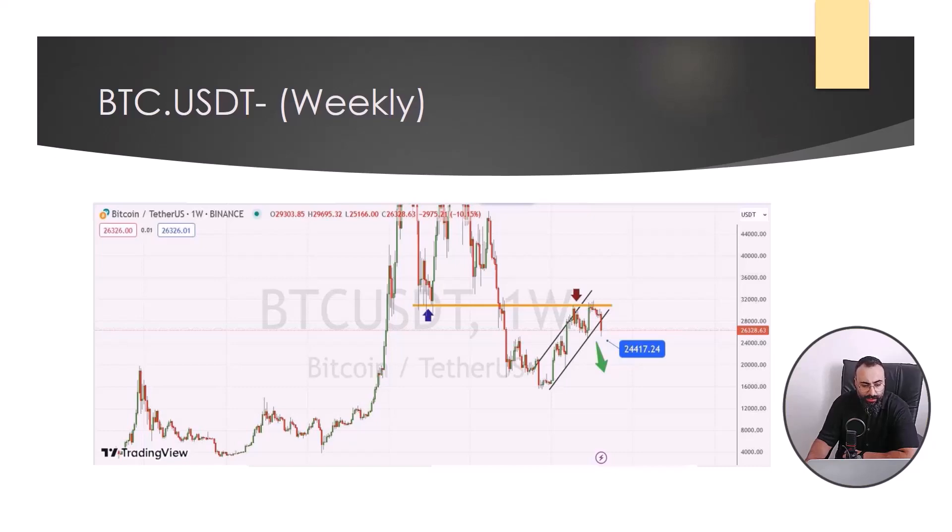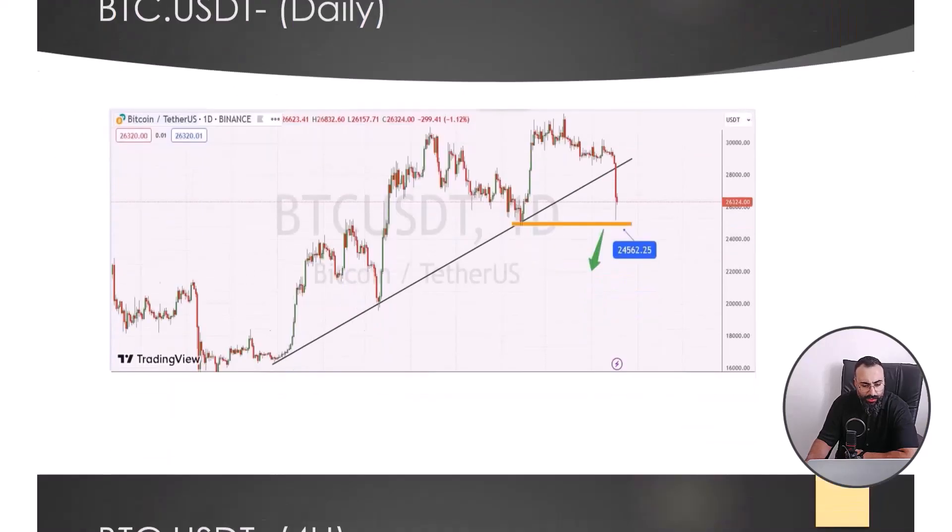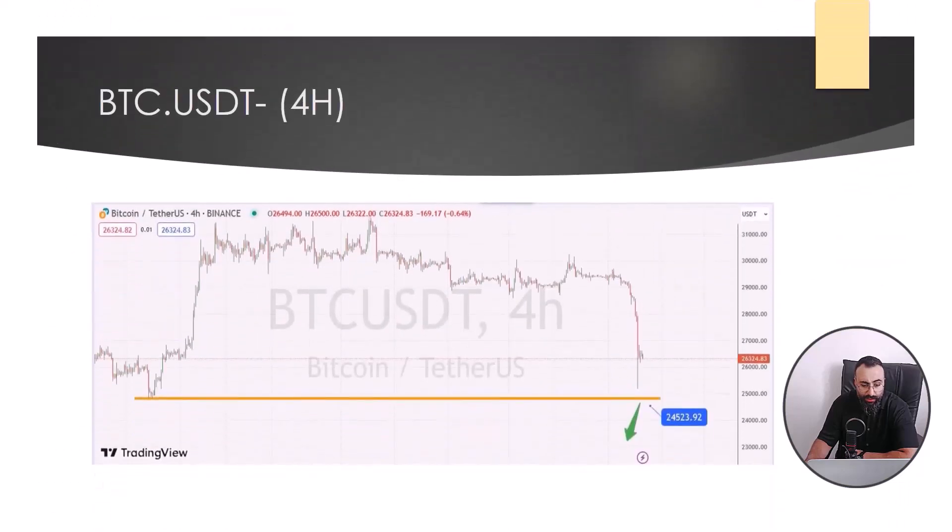Let's go back to the daily. In daily time, with the failure of the $24,562 support, there will be a price drop. And in the 4-hour timeframe, according to the structure of the chart, if the support level of $24,523 is broken, the price will drop to a range of $23,000. You can set the loss limit at $26,300.